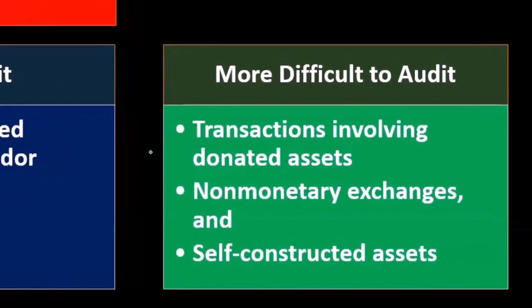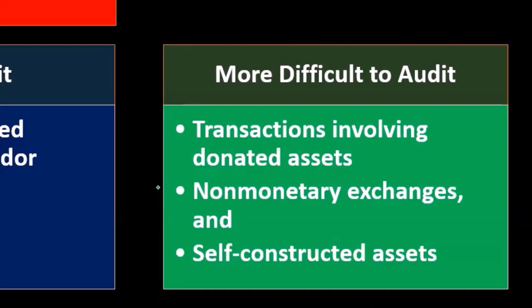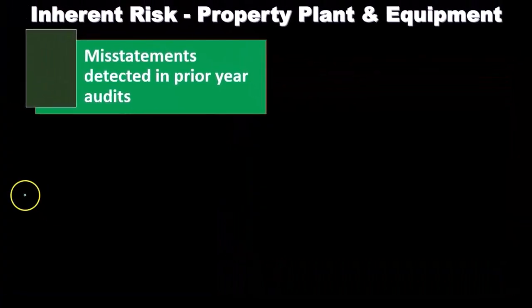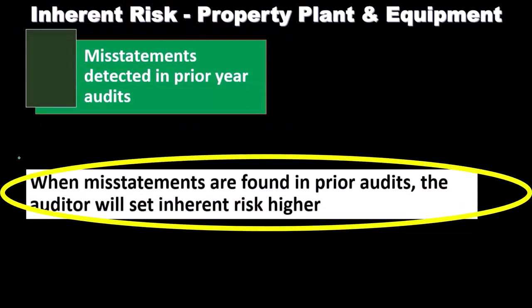More difficult transactions include donated property — where there's no market transaction to establish value — and non-monetary exchanges, where no money changed hands. We'd want to consider whether it was an arm's-length transaction to apply a market value method. Self-constructed assets are also more difficult to audit. When misstatements are found in prior years, the auditor will increase the inherent risk factor in the current year.